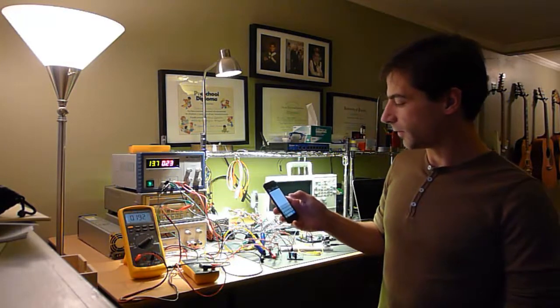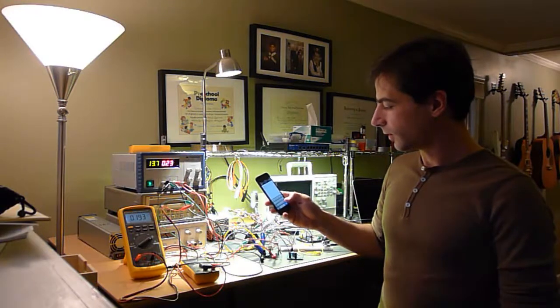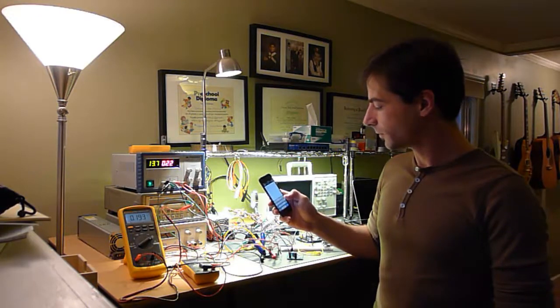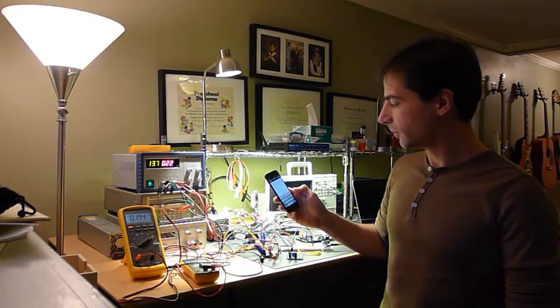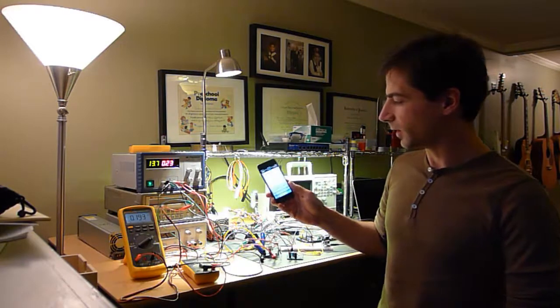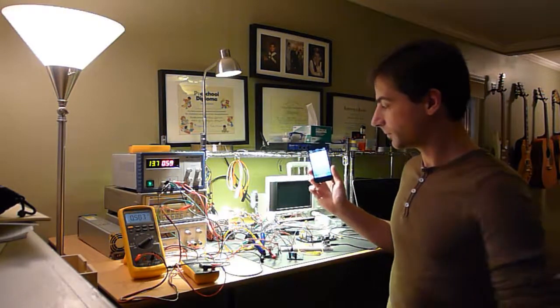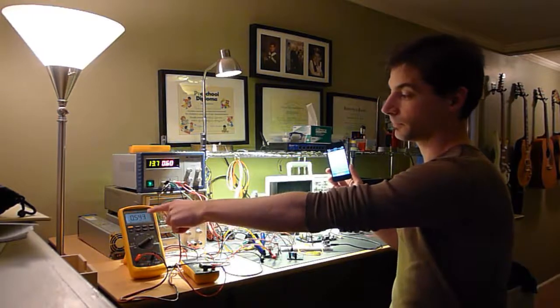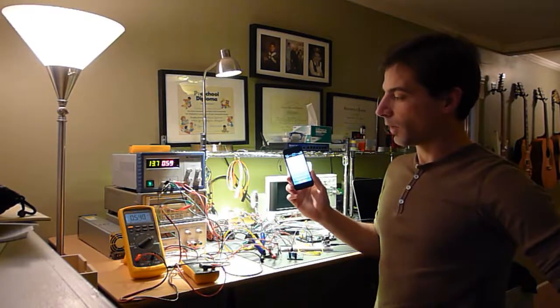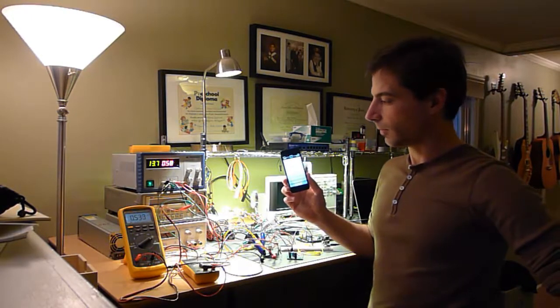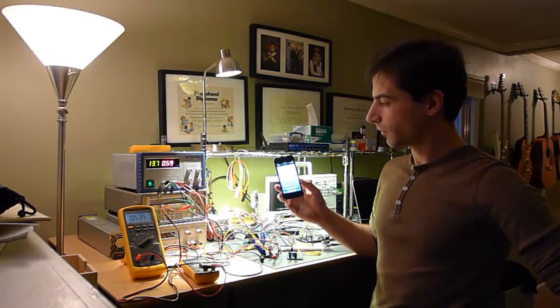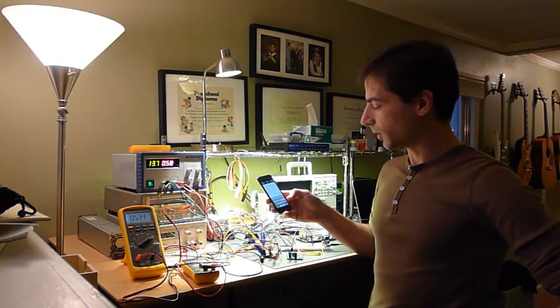So I have a little app here on the phone and you type in a current level. Right now it's at 200 milliamps and we'll type in 500 and send. We're now burning 540 milliamps and we're going down a little bit but that's pretty much perfect.